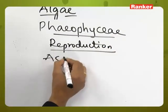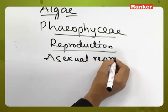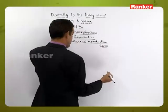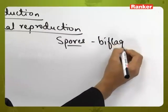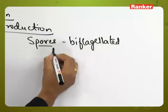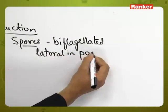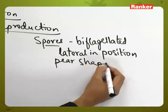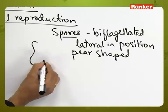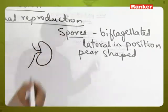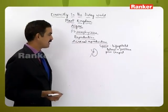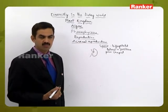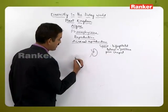In reproduction, Phaeophyceae members participate in asexual reproduction in which they produce spores. Generally these spores are biflagellated and lateral in position — the flagella are present in a lateral position and the spores are pear-shaped. These motile spores use their flagella to disperse and settle on a suitable substratum to germinate and give rise to new individuals.